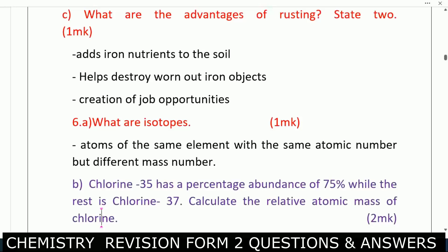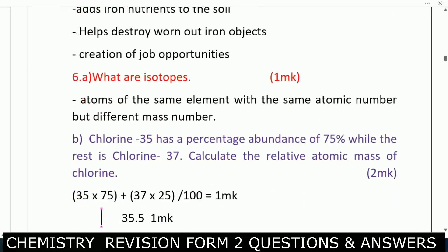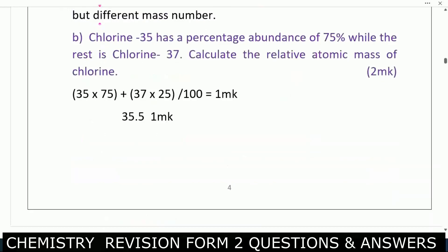Question six: what are isotopes? Isotopes are atoms of the same element with the same atomic number but different mass numbers. Next: chlorine-35 has a percentage abundance of 75% while the rest is chlorine-37. Calculate the relative atomic mass of chlorine — that is how you calculate that.